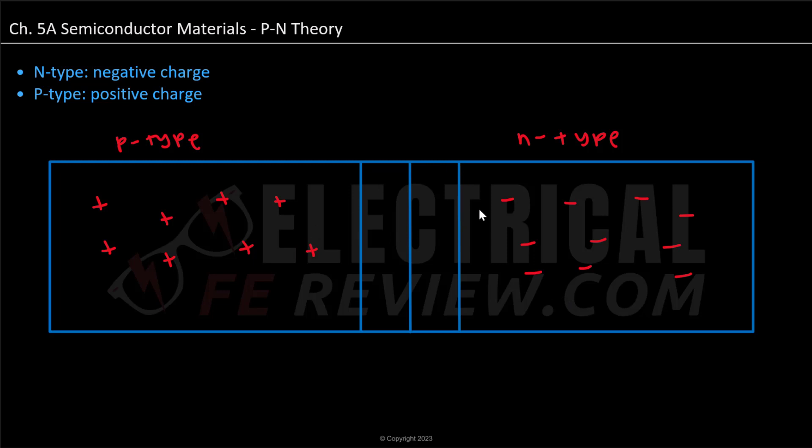We can put these together to create a PN junction. So our negative charges will combine with the positive, and our positive will combine with the negative.